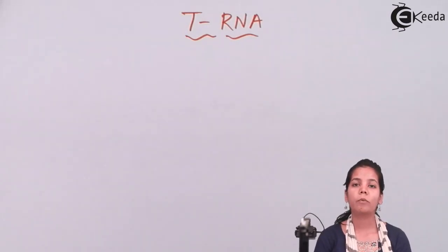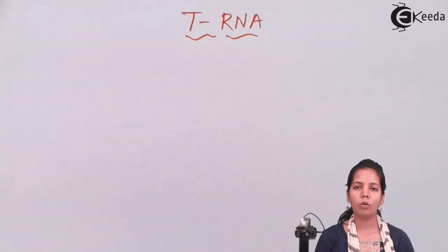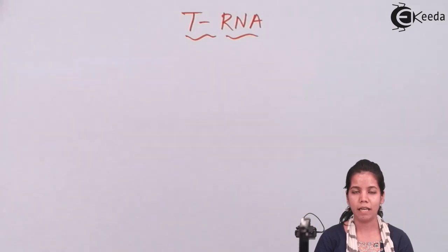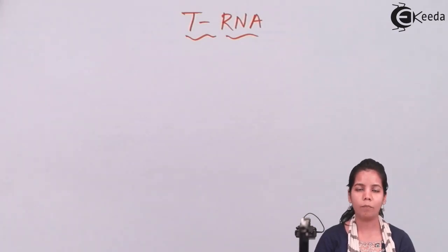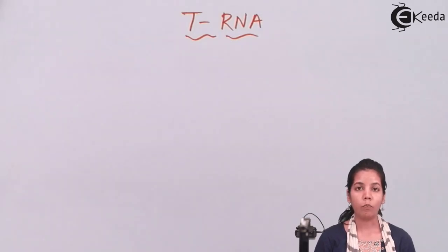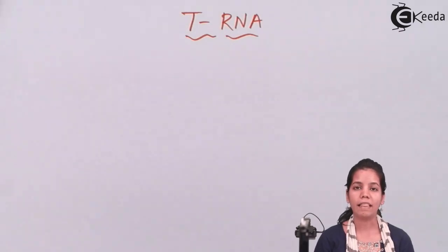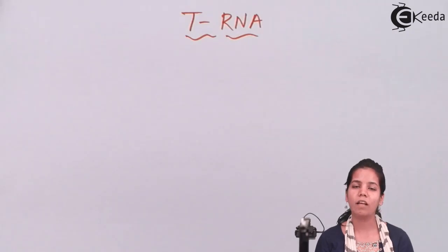tRNA plays a vital role during protein synthesis. On mRNA there are triplet codons present, and these triplet codons are messages present at a particular distance on your mRNA. For each codon, there is always an anticodon, and this anticodon is present on your tRNA or transfer RNA.